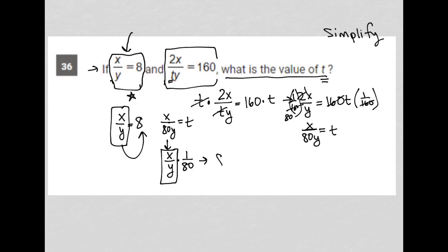So this becomes 8 times 1 over 80 equals t, which is the same as 8 over 80 equals t. And it's the same as 1 tenth equals t, right? Because 8 goes into 8 once, 8 goes into 80 ten times. So there's my answer. t is equal to 1 tenth.